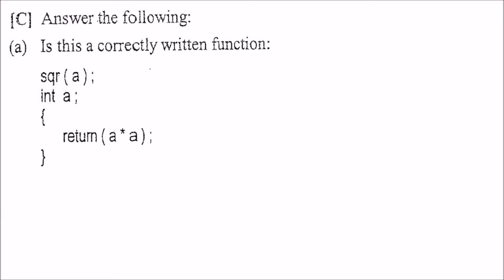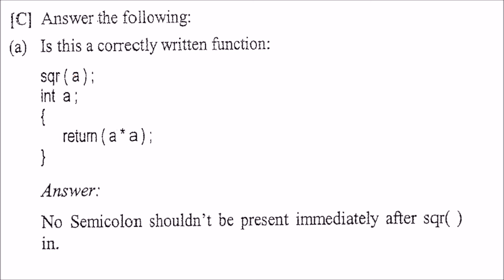Answer the following: is this a correctly written function? This is all good, this is all good. But this semicolon — when you are defining a function, you do not put a semicolon. Also, this way of defining — making a an integer — is the K&R method, the Kernighan and Ritchie method.